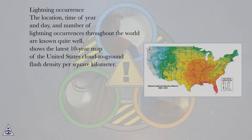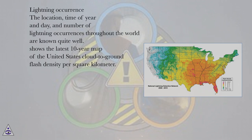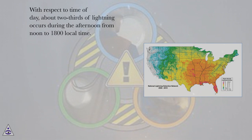Lightning Occurrence. The location, time of year and day, and number of lightning occurrences throughout the world are known quite well. With respect to time of day, about two-thirds of lightning occurs during the afternoon from noon to 1800 local time.